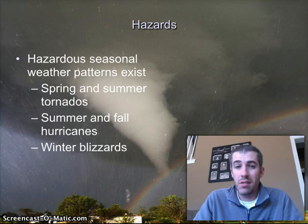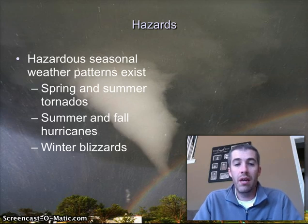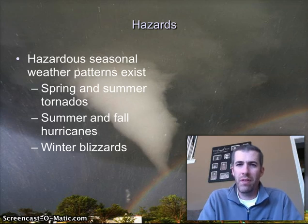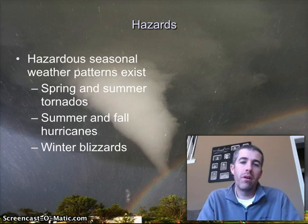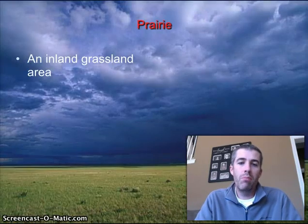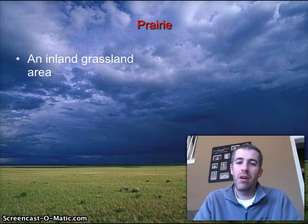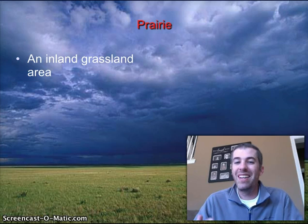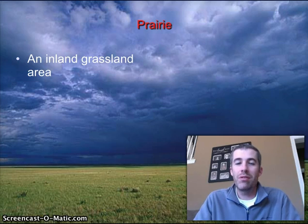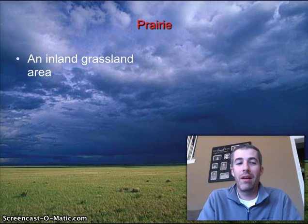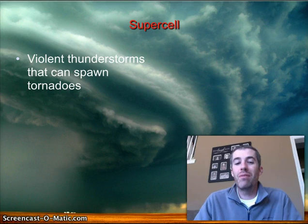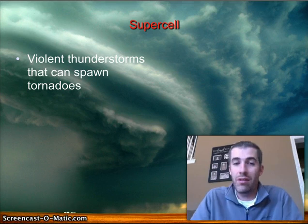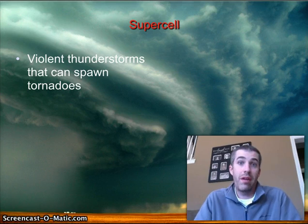In North America: spring and summer is tornado season; summer and fall is hurricane season; and then we get blizzards in the winter. It starts from the prairie coming off the Rocky Mountains and going across — this is where all the wind patterns and weather patterns start to develop. As they sweep across the prairie, which is that grassland area, they can develop into something like a supercell. These supercells are where we get really violent thunderstorms, and this is where things like tornadoes come from.